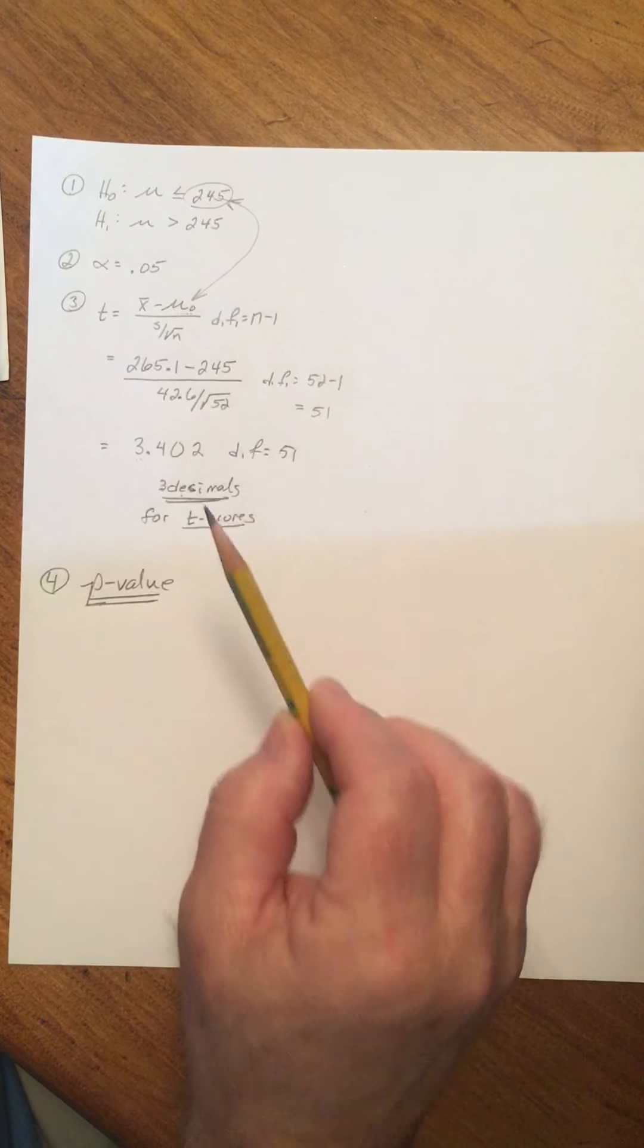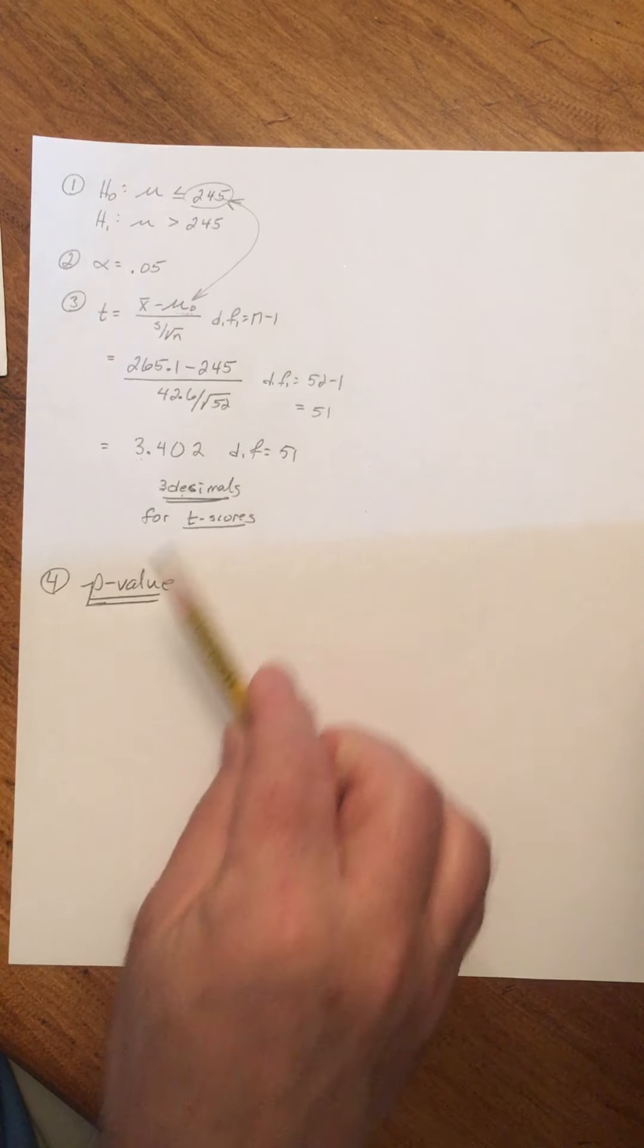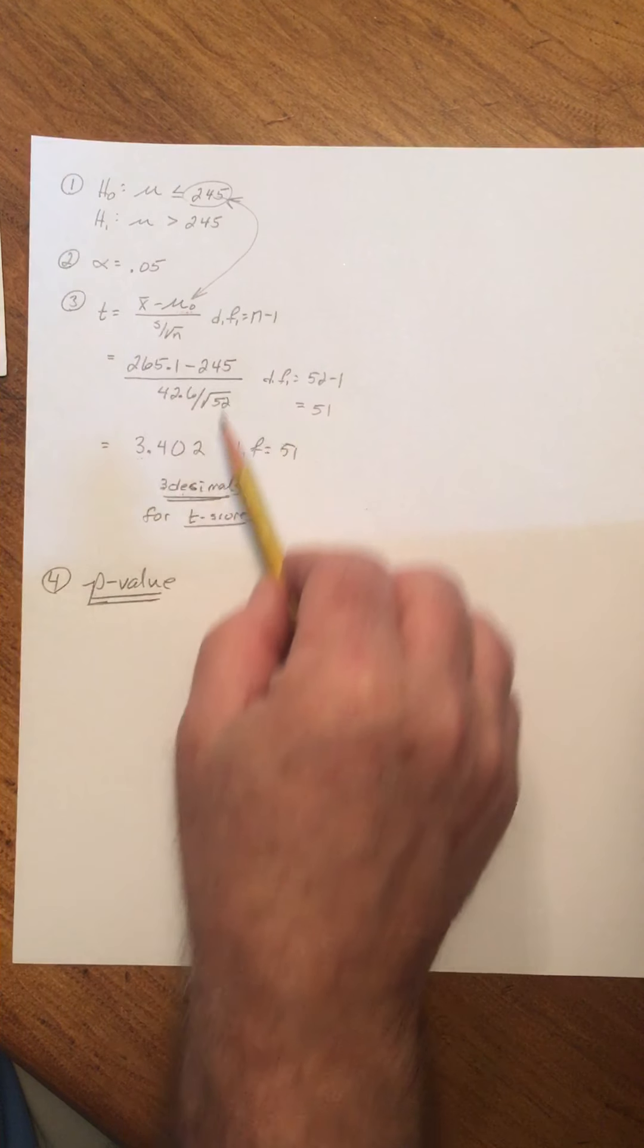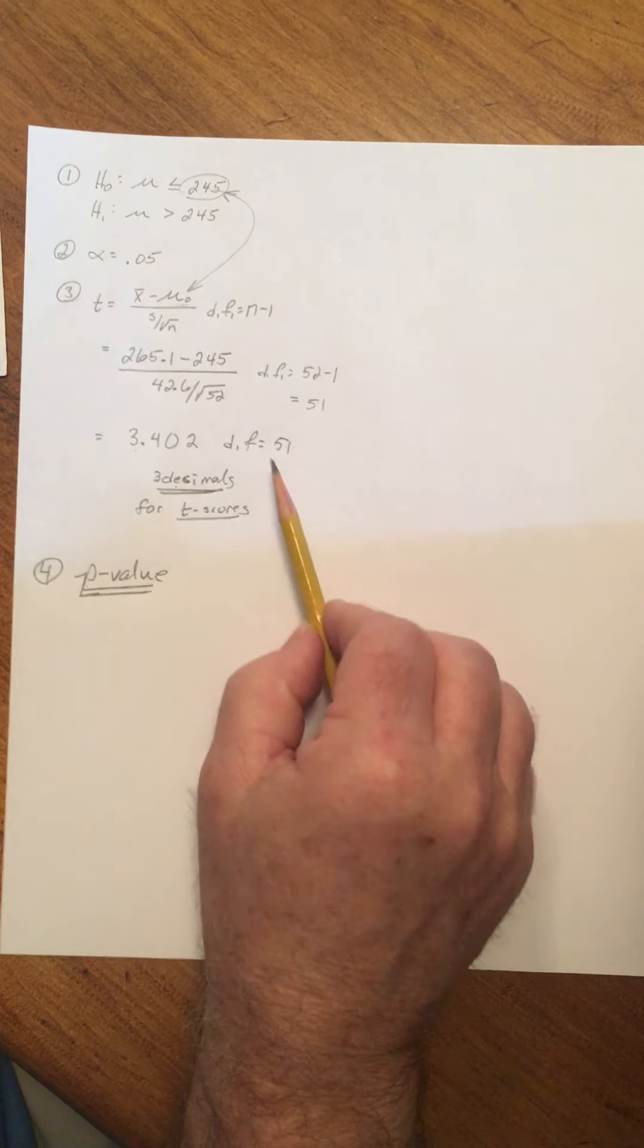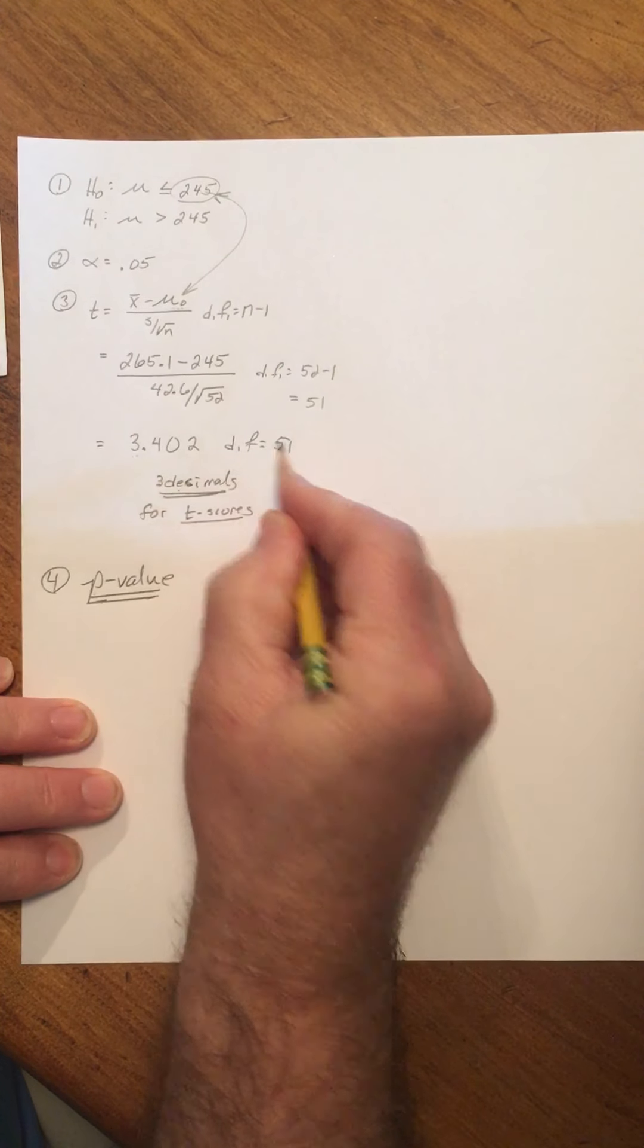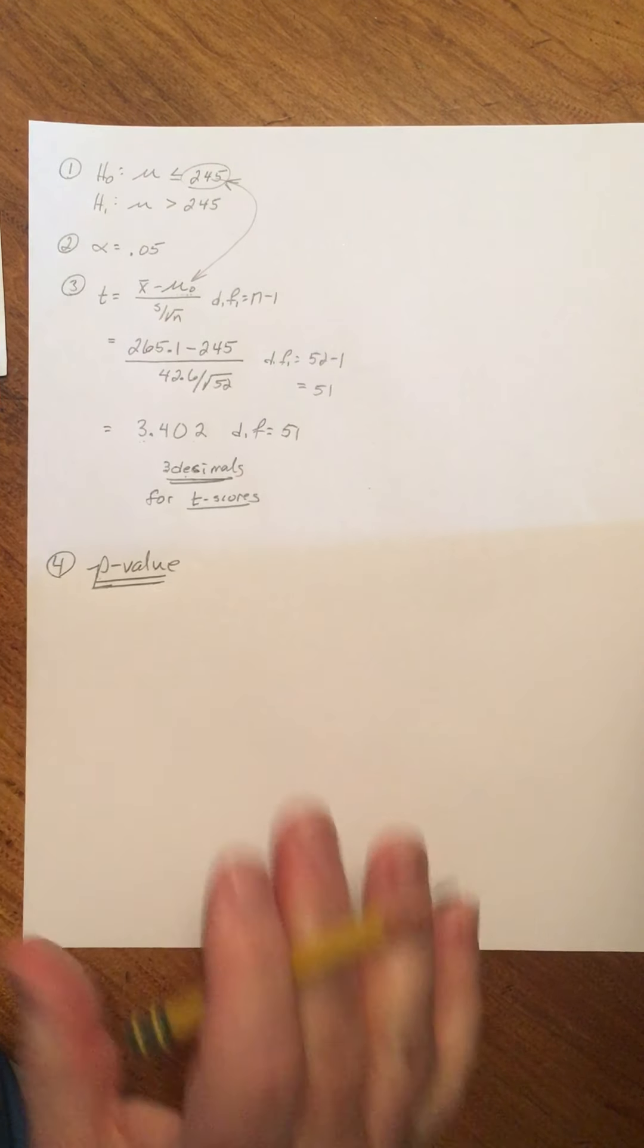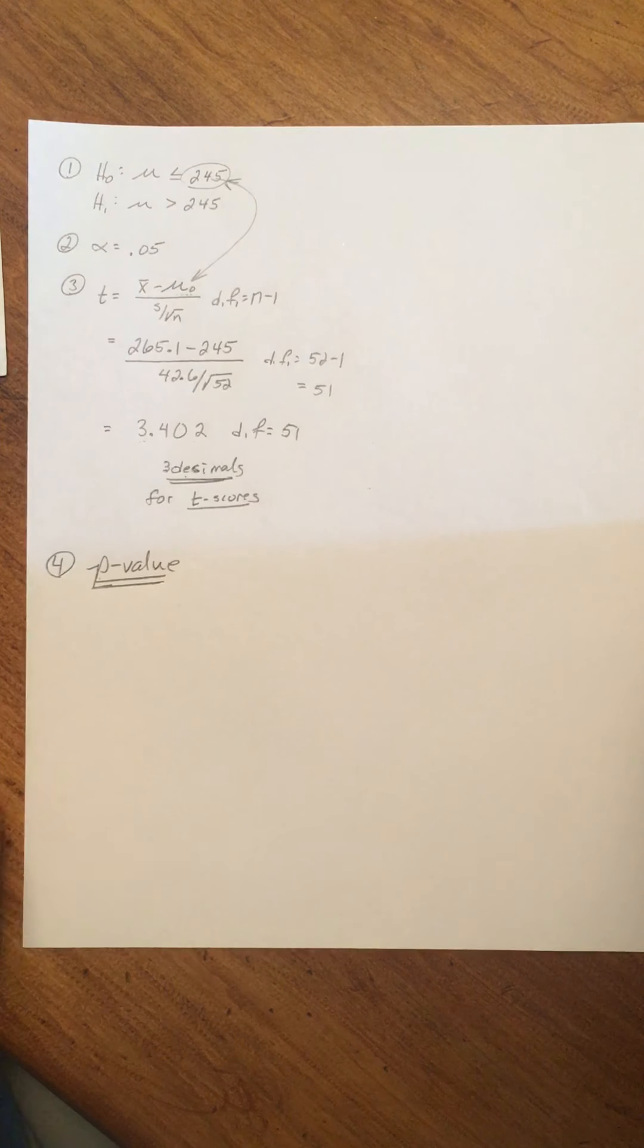So depending upon what we inherit from step three will influence how we work step four. So this now is a procedure for finding the p-value in step four. The t-value in this case is 3.402 with 51 degrees of freedom. For now I'm going to talk about just how to find it, and then a little later we'll talk about what does that mean.